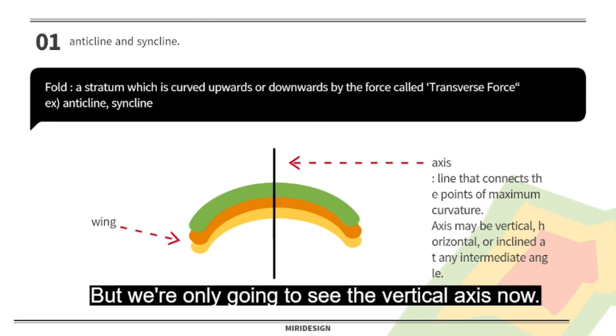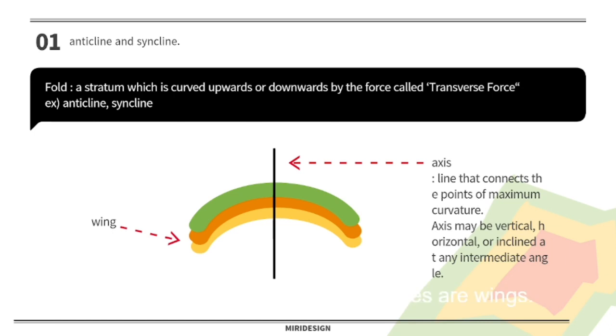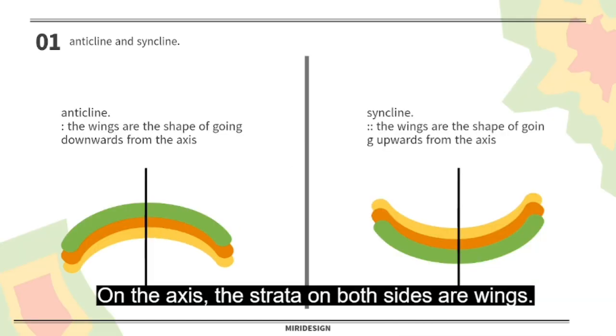But we are only going to see the vertical axis now. On the axis, the stratum on both sides are wings.